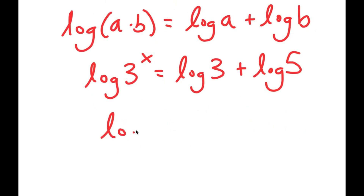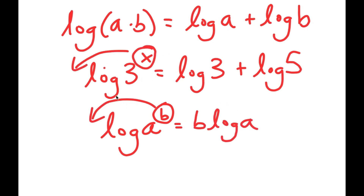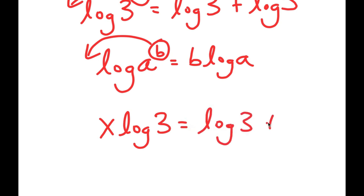And if I have something in the form log(a to the power of b), I can move b to the front, so I get b times log a. So log 3 to the power of x — I can move the x to the front — and I get x times log 3 is equal to log 3 plus log 5.